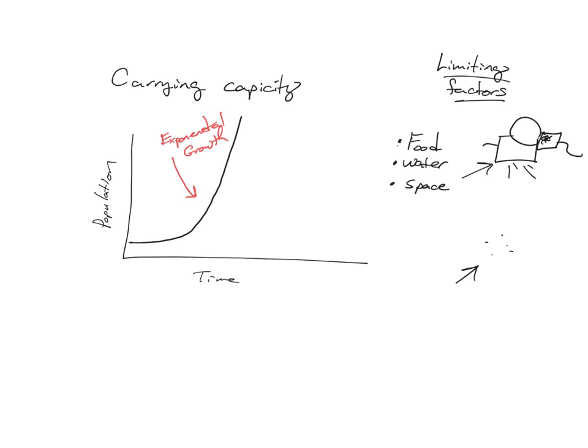Now, bacteria you'd expect that they do that because they don't really have a lot of limits to their growth chart. Now, if we take a look at elephants though, elephants are going to start off just like bacteria. They're going to start exponential growth, but at some point they're going to start to limit off. They're going to die off. Why? Because they don't have enough what? Food, water, space.